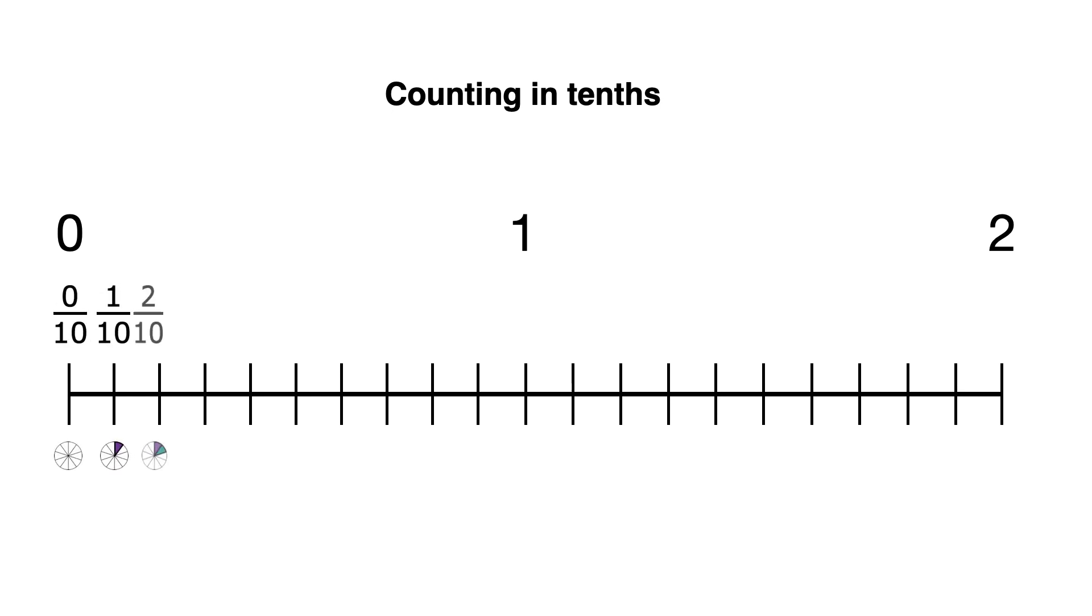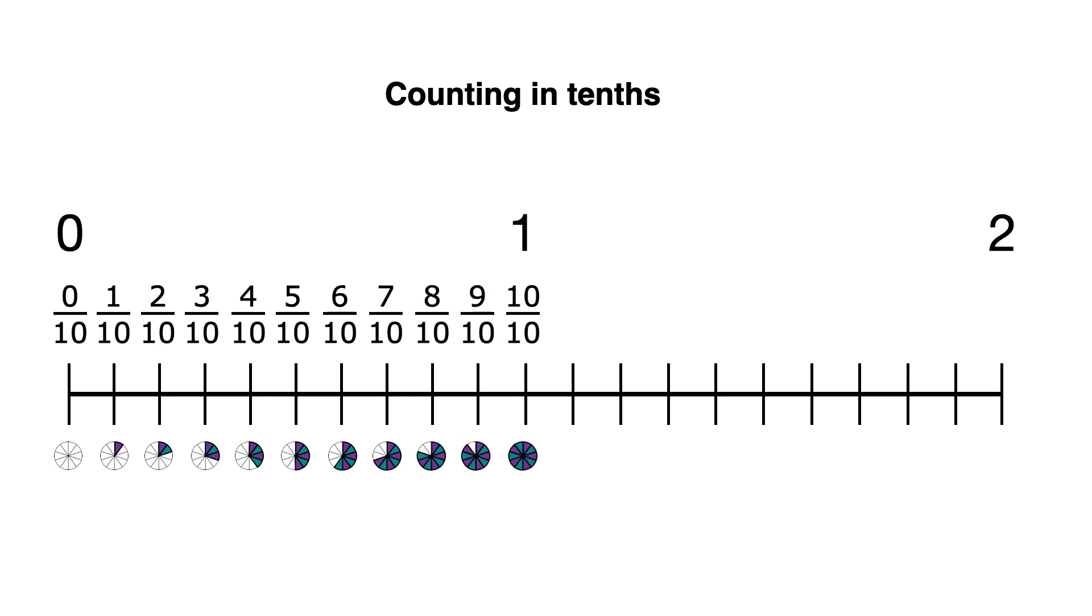0 tenths, 1 tenths, 2 tenths, 3 tenths, 4 tenths, and we keep going. Past 1,